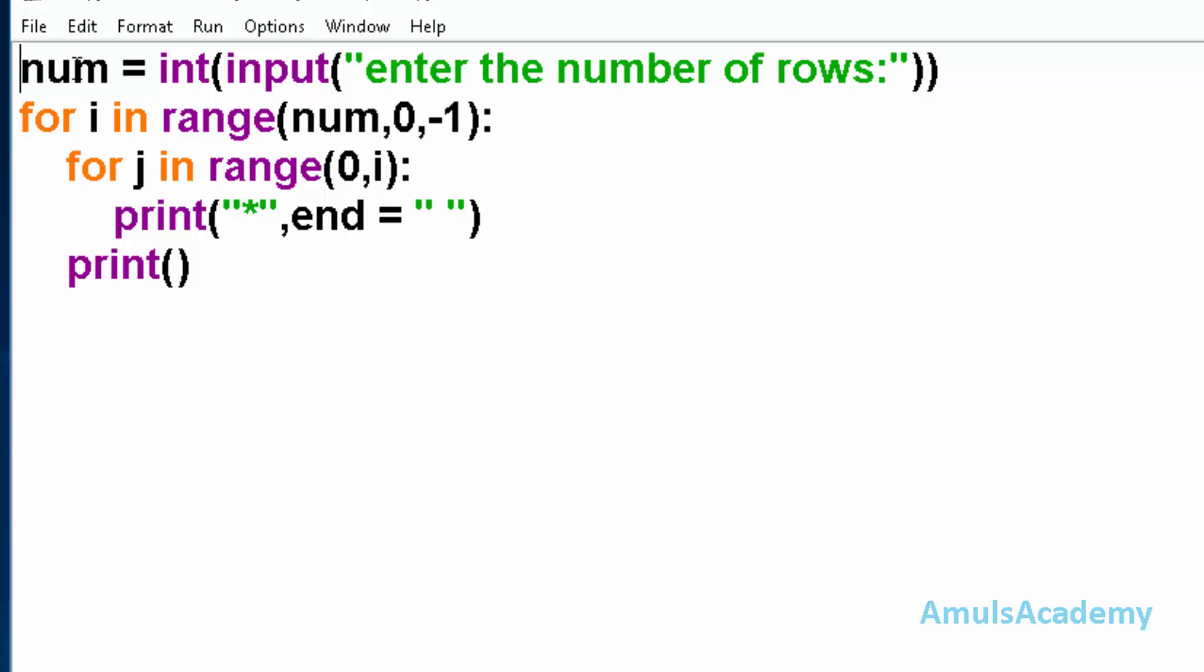If the entered value num is 5, then initially i will be 5, so it will print 5 stars in the first row. After that, i becomes 4, so we get 4 stars. This continues for each row.